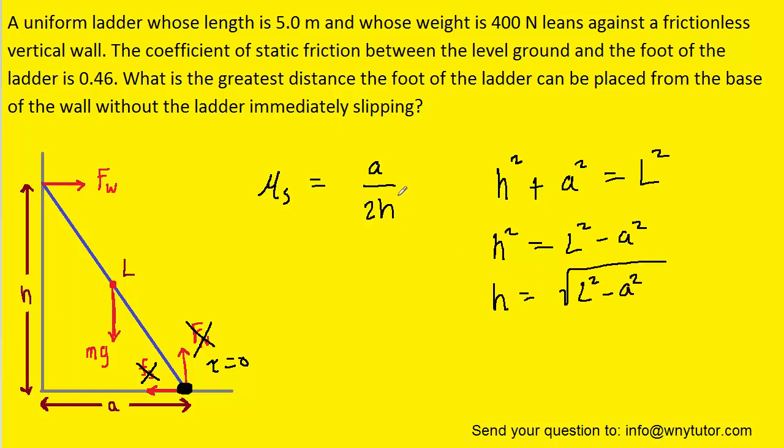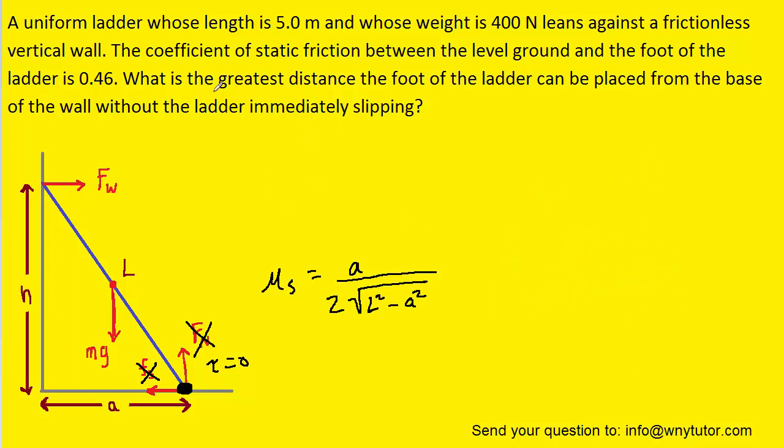So we're going to substitute right here for h with this quantity. Now, let's keep in mind what we're actually trying to solve for. We're looking for the distance from the foot of the ladder to the base of the wall. Looking at the diagram, that distance is equal to A. So we have to try to solve this equation now for A.